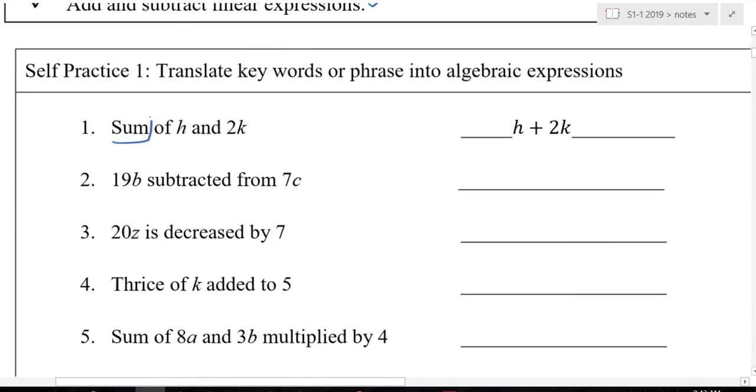If I say sum, sum means what? Plus. Then h and 2k. Sum. Oh, that means h plus 2k. Easy? Easy.